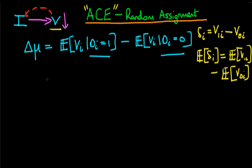In this video we're going to see how random assignment of a state to a particular group — in other words, random assignment of whether a state receives infrastructure spending or not — actually allows us to evaluate the average causal effect.